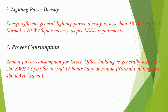Feature 3: Power Consumption — annual power consumption for a green office building is generally less than 250 kWh/sq.m for normal 12-hour/day operation, whereas normal buildings consume around 400 kWh/sq.m.